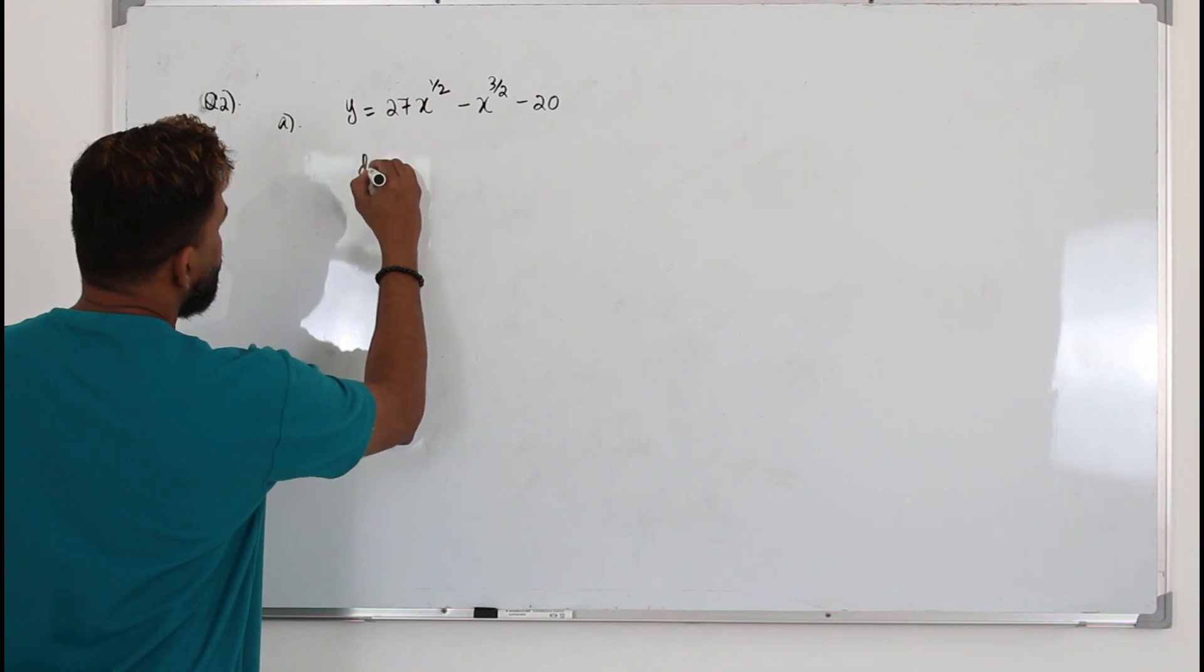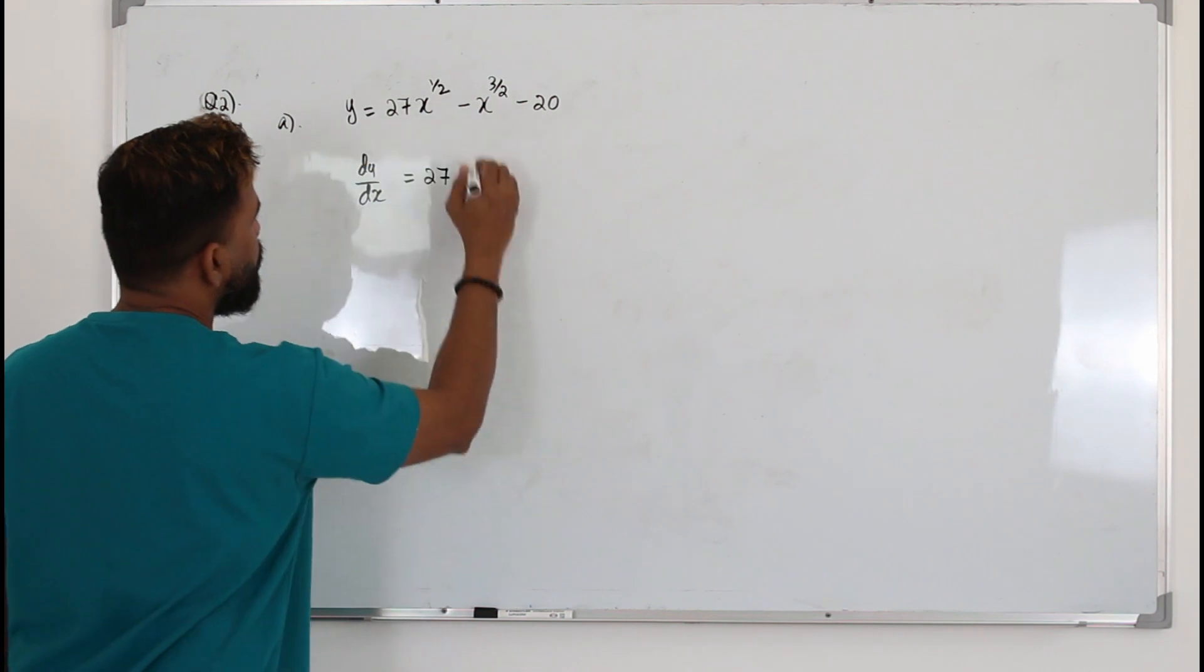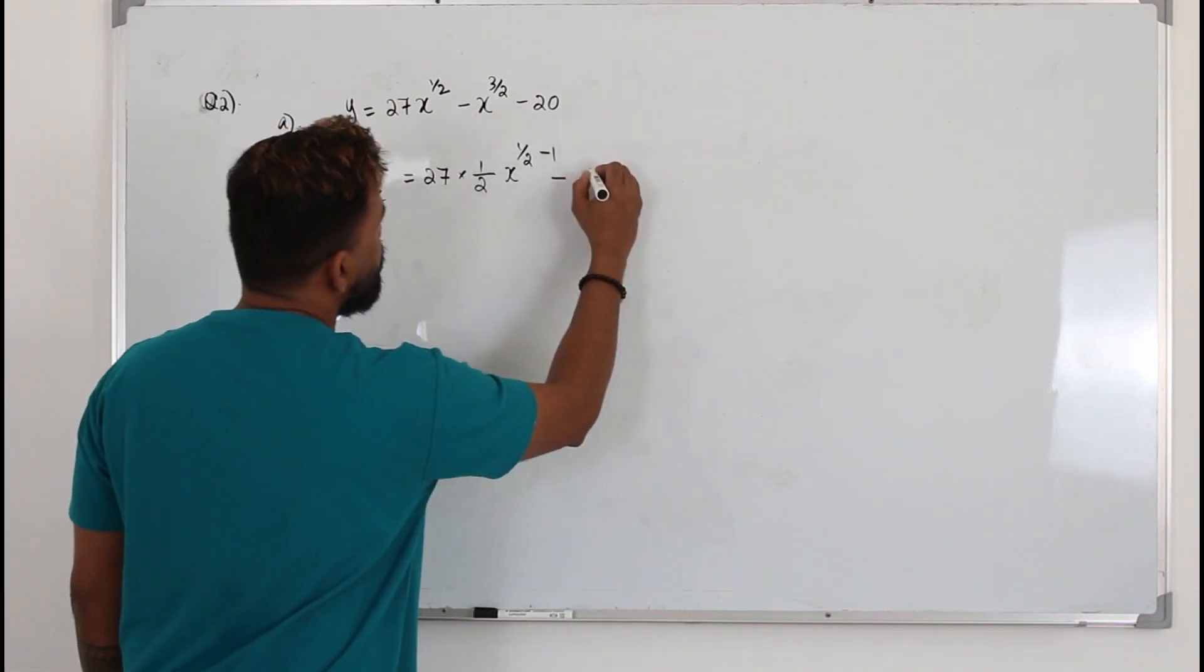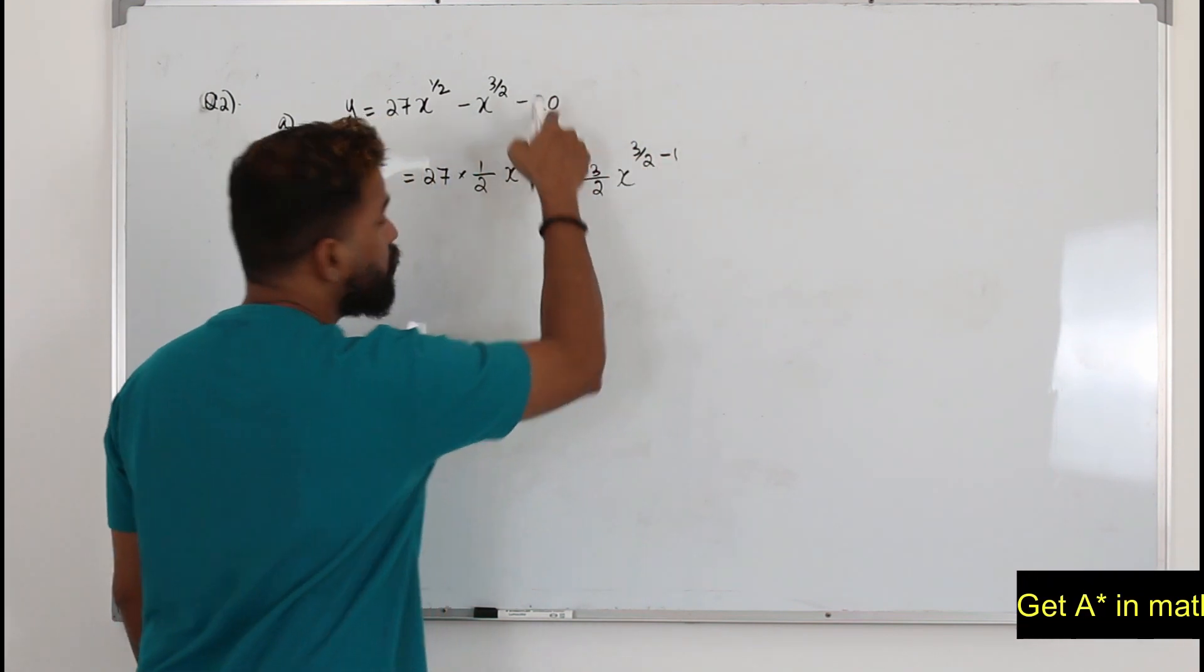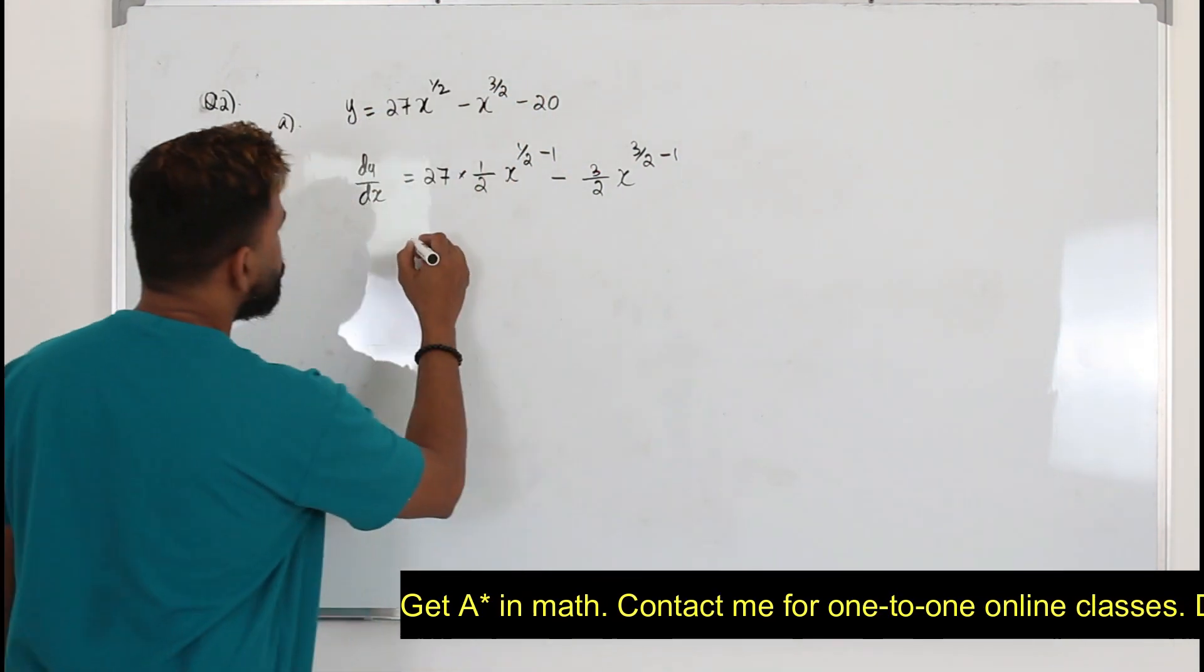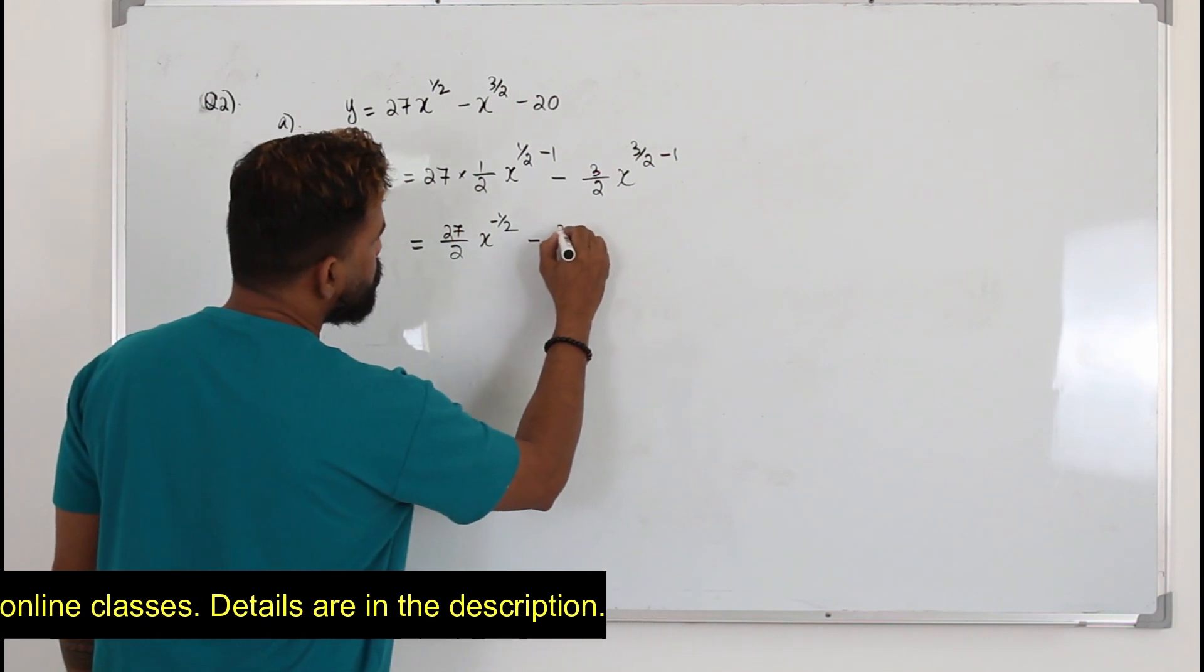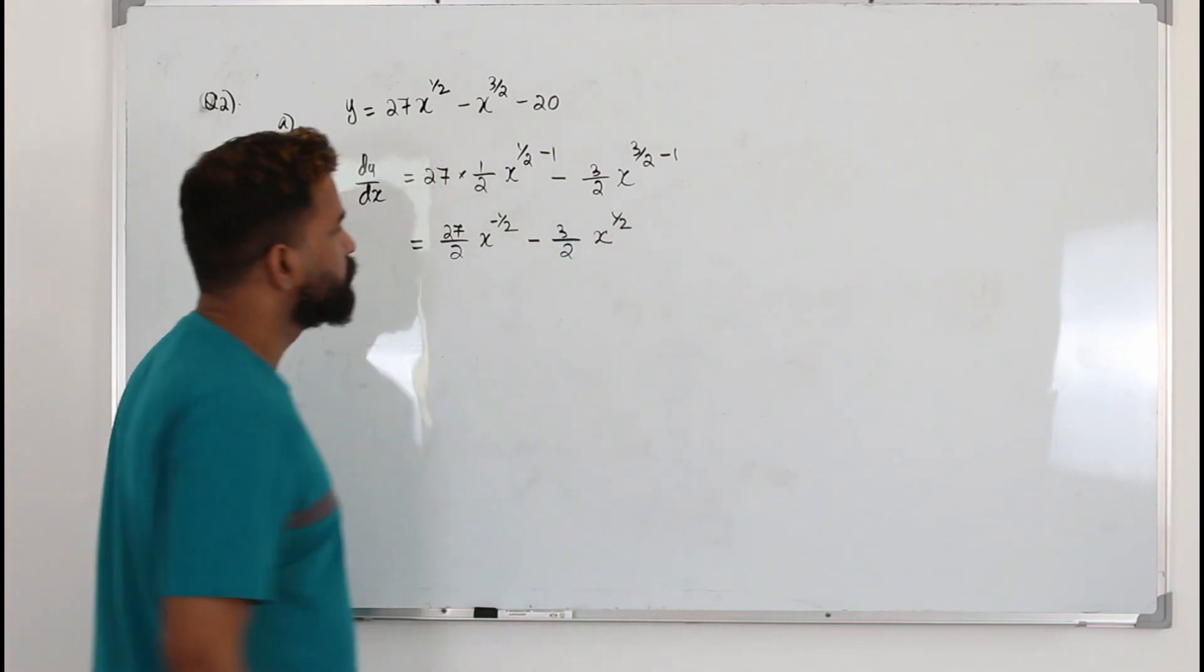So dy upon dx will be 27 is a constant, keep it as it is. x power n when you differentiate it becomes n x power n minus 1. Minus here n x power n minus 1. A constant term independent of x will become 0 when differentiated. So it's 27 over 2 x power minus half minus 3 over 2 x power half. That's it.